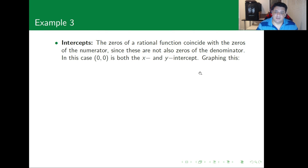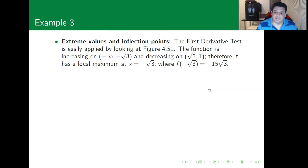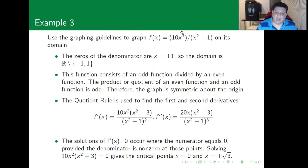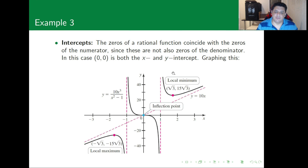The zeros of a rational function coincide with the zeros of its numerator, as long as they are not zeros of the denominator. The only crossing with both the x-axis and y-axis is the inflection point at x = 0. Since the degree difference between numerator and denominator is exactly one, this function has a slant asymptote.